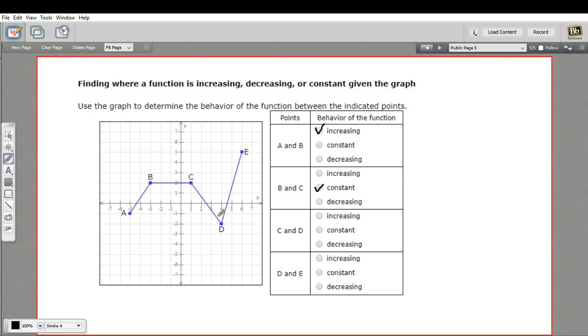And then between C and D, it goes downhill, so that's a decreasing section of the function. And then between D and E, it goes sharply up again, so that's increasing again.